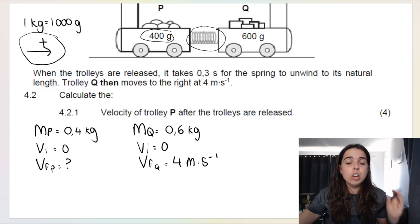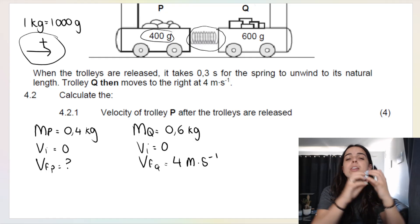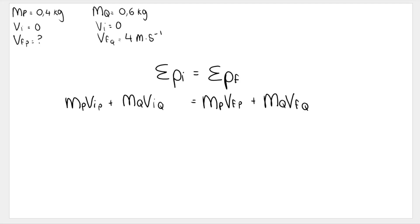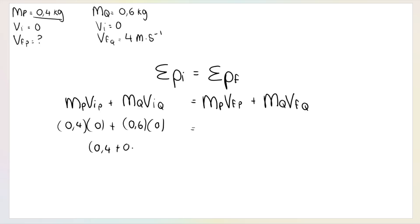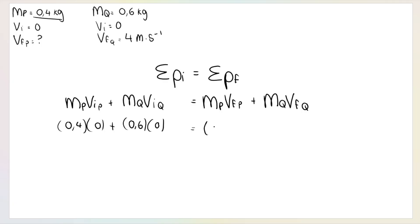Setting up the formula: mass of P is 0.4, initial velocity of P is zero; mass of Q is 0.6, initial velocity of Q is zero. On the right-hand side: mass of P is 0.4, final velocity of P is unknown; mass of Q is 0.6, final velocity of Q is 4. The left-hand side equals zero. On the right we have 0.6 × 4 = 2.4, plus 0.4 × vf(P).